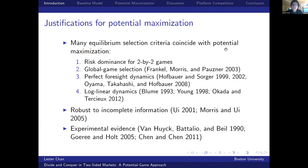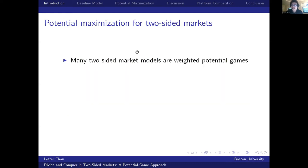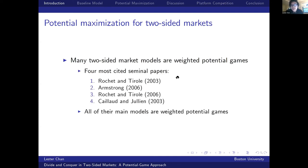Although potential maximization is applicable only to potential games, for the four most-cited papers in two-sided markets, all of their main models are weighted potential games. Therefore we can apply potential maximization to resolve the multiple equilibria issue. In this presentation I will apply potential maximization to a special case of Armstrong's model in which agents from the same side are identical, and derive some novel insights into two-sided markets. Let me pause here to see if there are any questions.